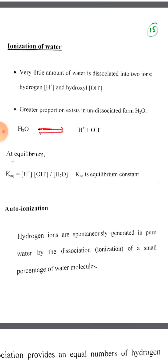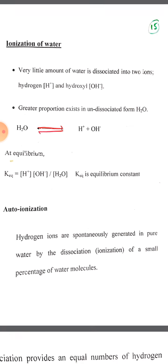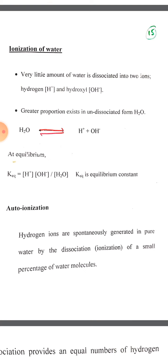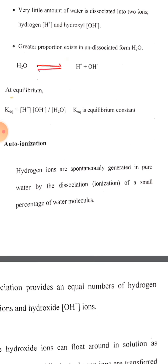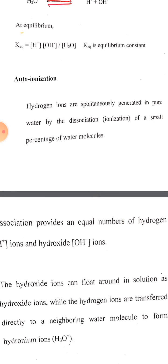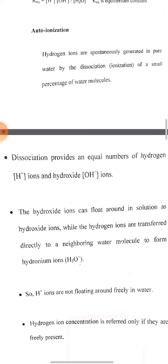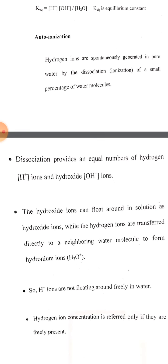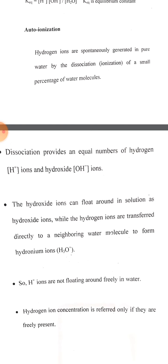Passing electricity through water or adding acid enhances dissociation tendency, producing more ionic form. The equilibrium constant Keq equals products over reactants — the molar concentration of ions divided by undissociated water molecules. Auto-ionization is the spontaneous conversion of water molecules into hydrogen and hydroxide ions. Because equal numbers of H⁺ and OH⁻ are produced, the pH of water is neutral at 7.